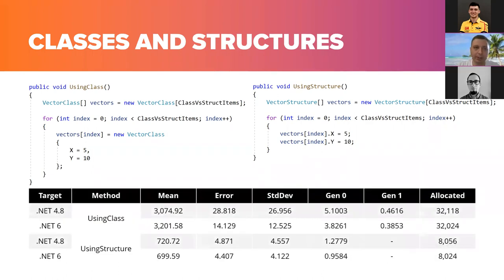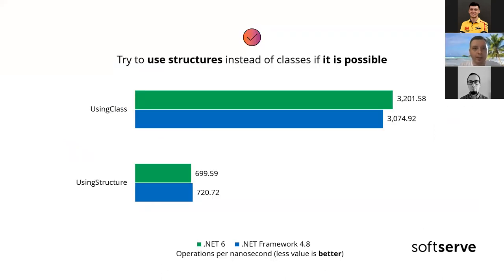In the benchmark, the first method creates an array of classes and the second creates an array of structs. Both class and struct have two properties, X and Y, with an index of one thousand items. The results show that allocation of structs is much faster compared to classes, with structs allocated in generation zero rather than generation one. Try to use structs instead of classes if possible — use structs when the size is 16 bytes or less, the struct is short-lived, immutable, and will not have to be boxed frequently.